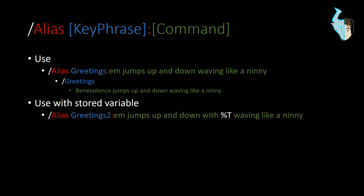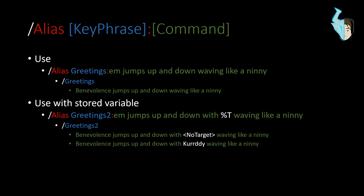How can we make this even better? You can use this with a stored variable. So now when I type — or even better, apply this to a macro — '/alias greetings_to', that's my key phrase, followed by '/em jumps up and down with %T' — we all know %T is whoever you're targeting — 'waving like a ninny.' Now I type '/greetings_to' and there's the eventuality you might not have targeted someone, so you'll get: 'Benevolence jumps up and down with no target waving like a ninny.' But had I targeted our buddy Curti, it states: 'Benevolence jumps up and down with Curti waving like a ninny.'